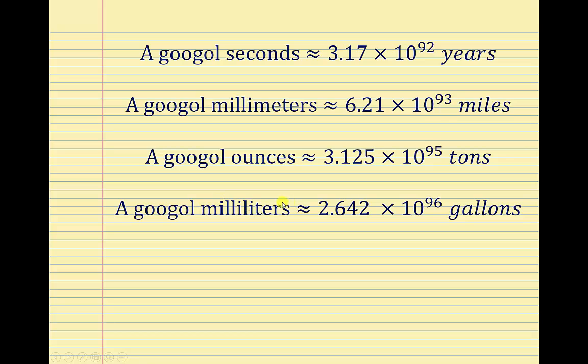A googol milliliters would be approximately 2.642 × 10^96 gallons. And finally, a googol milliliters could also be expressed as approximately 8.386 × 10^94 barrels, where a fluid barrel equals 31.5 gallons.